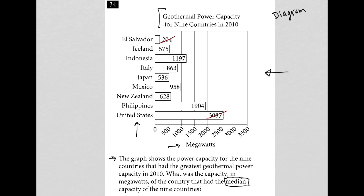The next lowest possible value here is 536, and the next highest value left on the list is 1904. The next lowest is 575, followed by 1197. The next lowest is 628, and the next highest is 958, leaving us with 863 as our middle value.